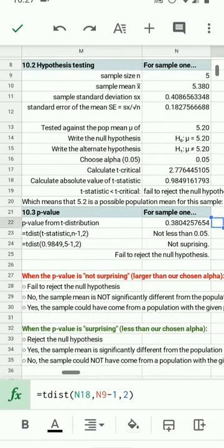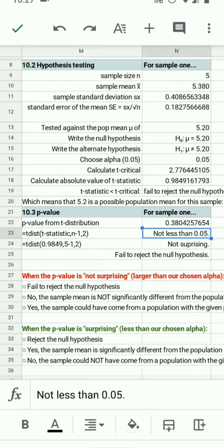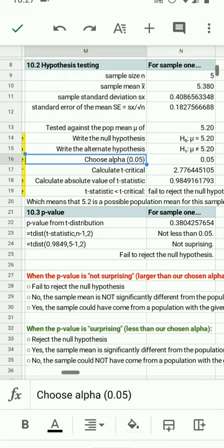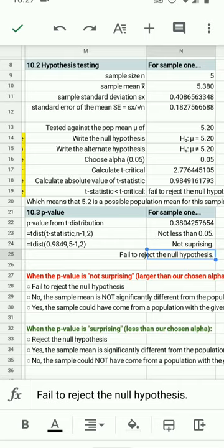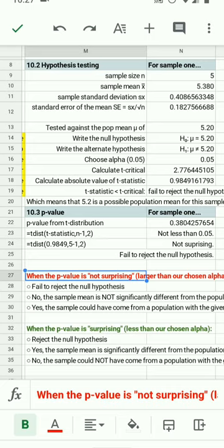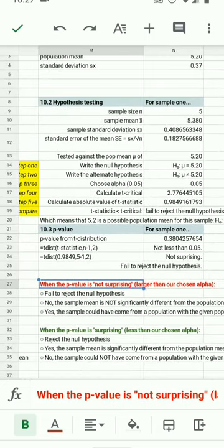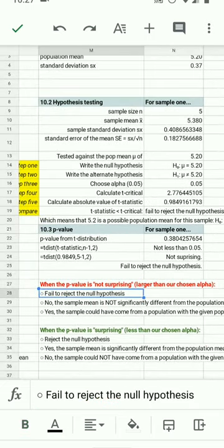A p-value is surprising when it's less than our chosen alpha. Our chosen alpha, you might recall, is 0.05. This is not less than 0.05. Therefore, it's not surprising and we fail to reject the null hypothesis. When the p-value is not surprising, when it is larger than our chosen alpha, we fail to reject the null hypothesis.